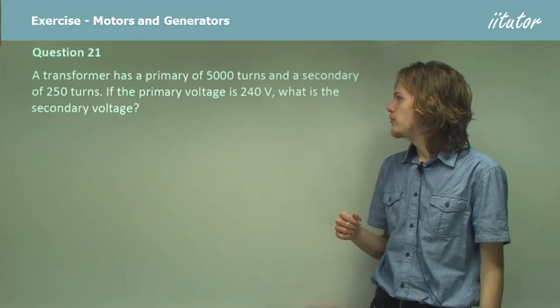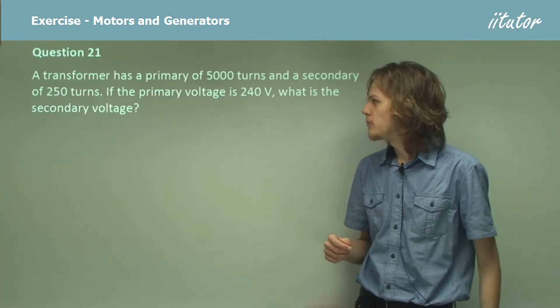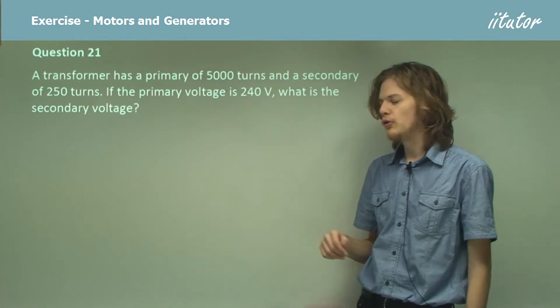A transformer has a primary coil of 5,000 turns and a secondary coil of 250 turns. If the primary voltage is 240 volts, what's the secondary voltage?